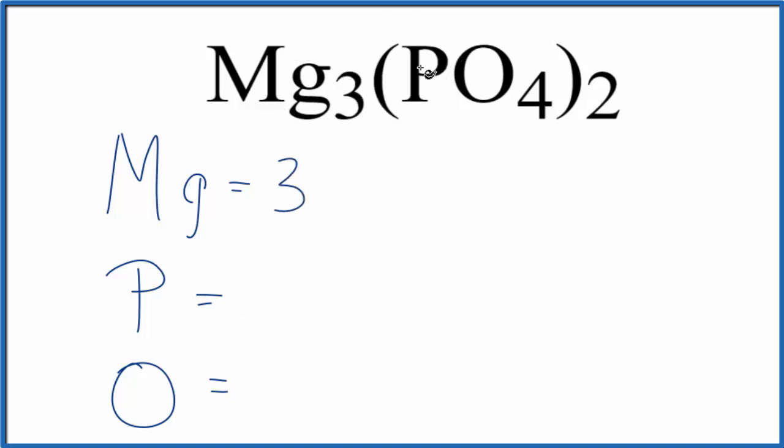For phosphorus, there's no subscript written, but we could write a one after that. We assume this to be one if nothing's written. So we have one phosphorus, but the two here applies to everything in the parentheses. So we have two times the one, two phosphorus atoms.